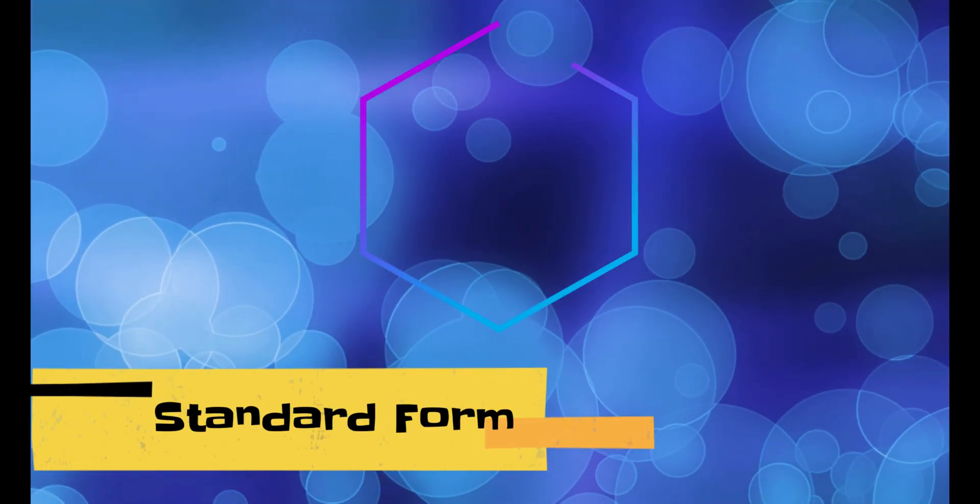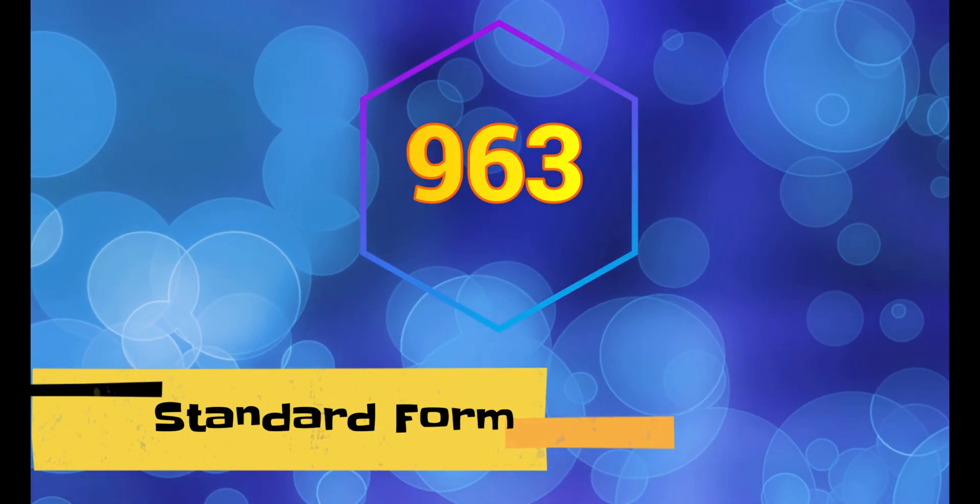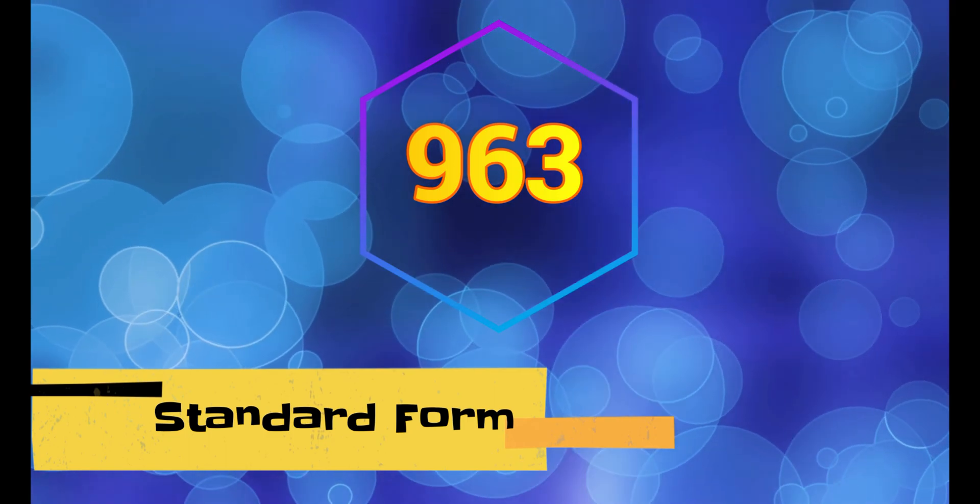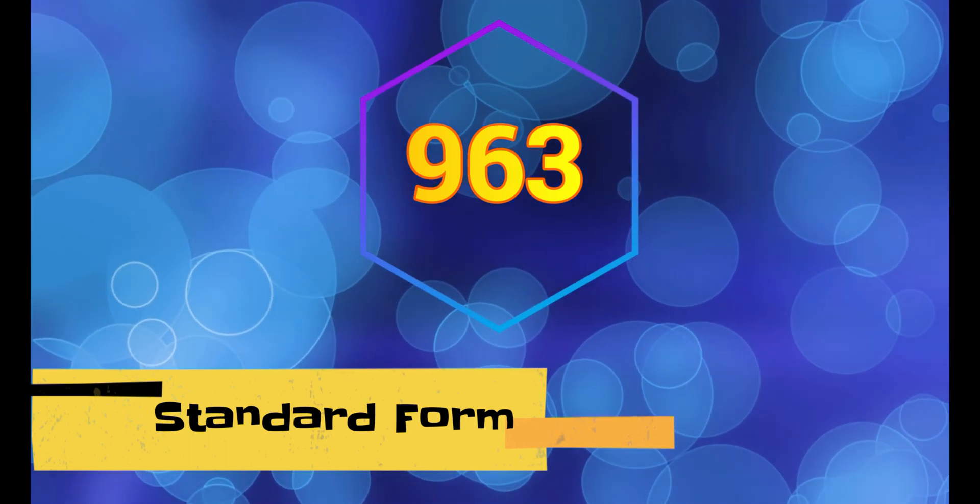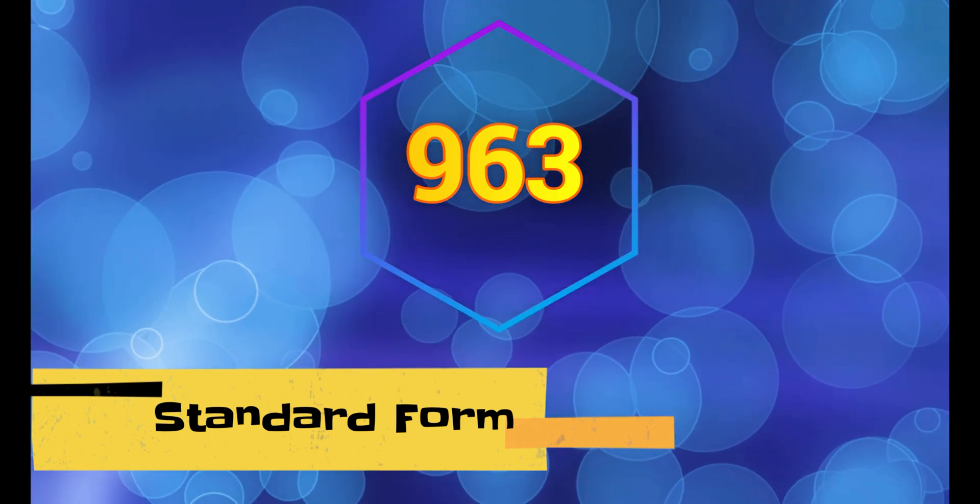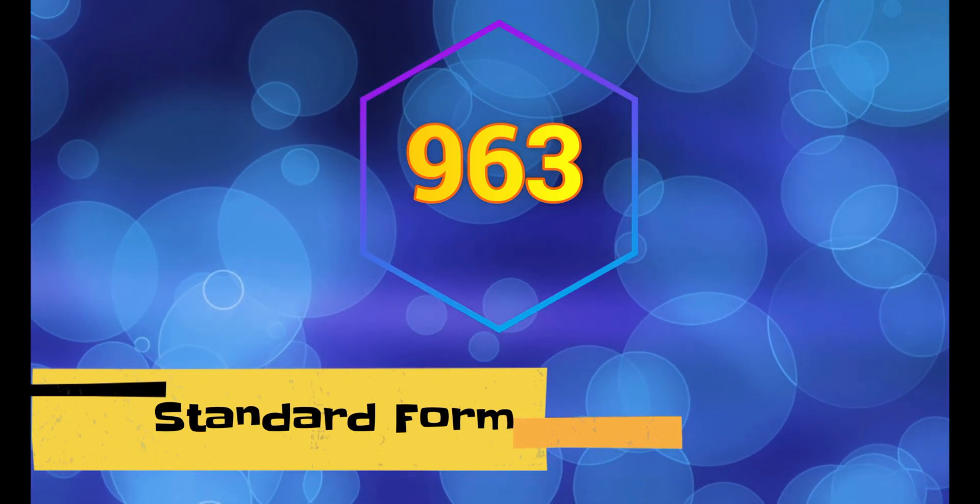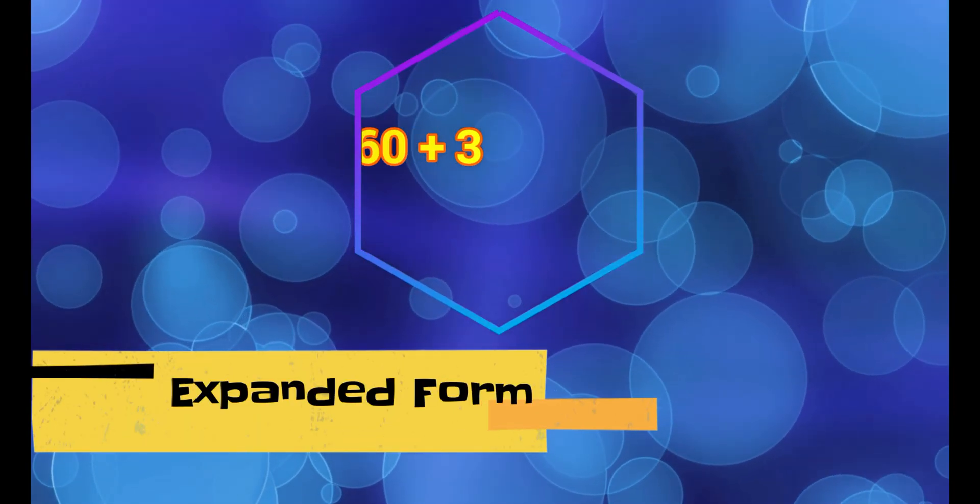There's a few different ways we can show numbers using place value. Let's use the number 963. Standard form is how the number is written most of the time so it's just 963. If you wanted to write the number out in expanded form what that means is stretch the number out.